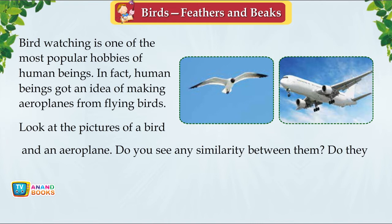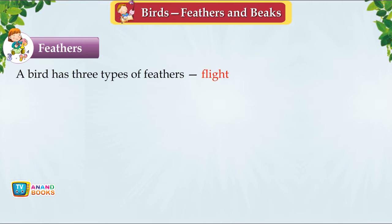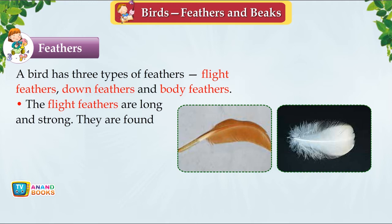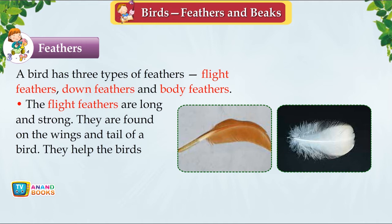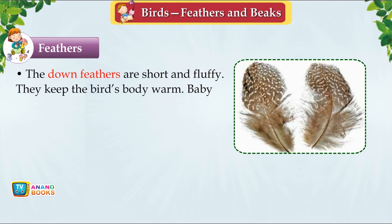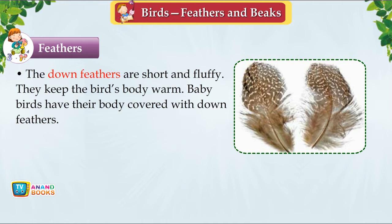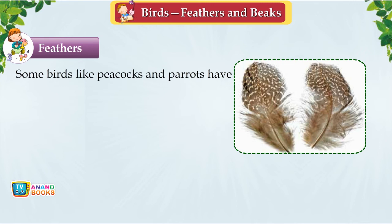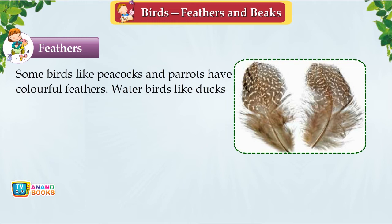Feathers. A bird has three types of feathers: flight feathers, down feathers and body feathers. Flight feathers are long and strong, found on wings and tail — they help in flying and changing direction. Down feathers are short and fluffy and keep the bird's body warm; baby birds are covered with them. Body feathers cover the body and give it a definite shape. Some birds like peacocks and parrots have colourful feathers. Water birds like ducks and swans have waterproof feathers that prevent them from getting wet.